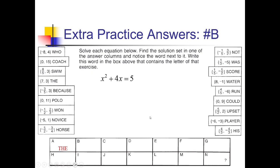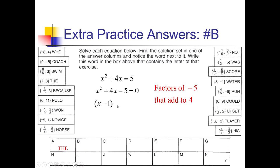Next up, for problem B, we need to first zero this equation out. So let me subtract that 5 over to the left side. Now I can look for factors of negative 5 that add up to 4. We can make this work if we make it negative 1 and positive 5. So I'll split this up into x minus 1 and x plus 5. Zeroing each of those out, we have 1 and negative 5 as our solutions. That's negative 5 and 1 — 'novice' — so that's going under spot B.